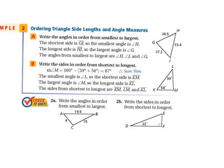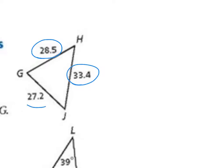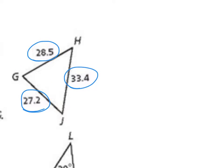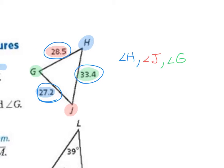Example A says to write the angles in order from smallest to largest. Looking at the triangle with sides 28.5, 33.4, and 27.2: the smallest angle is opposite the smallest side. Smallest side is 27.2, so the smallest angle is angle H. The middle side is 28.5, making angle J next. The largest side is 33.4, which is opposite angle G, the largest angle. So from smallest to largest: angle H, angle J, angle G.